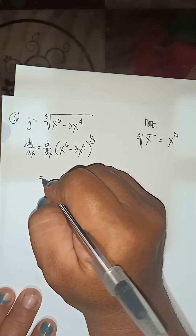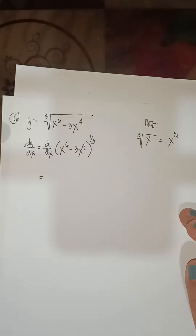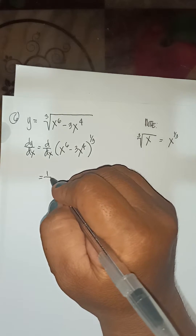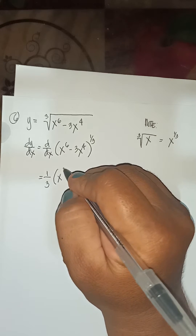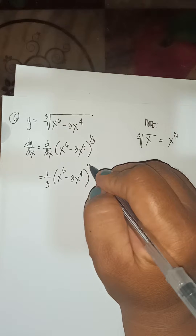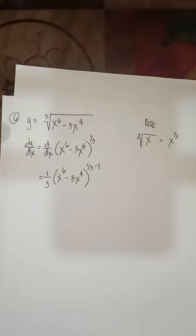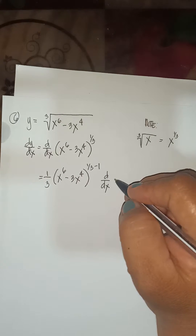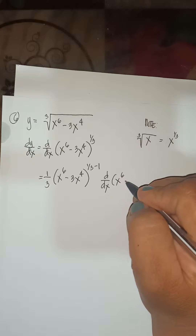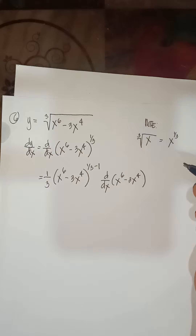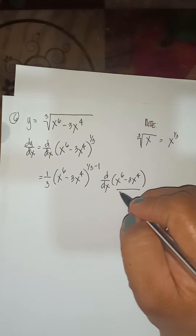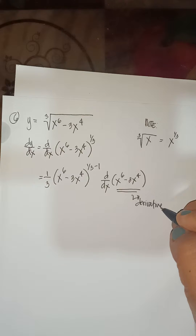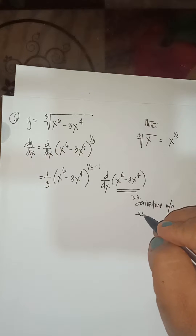So we are going to apply the power formula here. We are going to multiply 1/3, then x to the 6 minus 3x to the 4th, and 1/3 minus 1 by the power formula. Then for the derivative, we will have d/dx of u — the derivative of x to the 6 minus 3x to the 4th without the exponent.